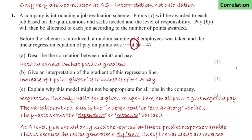At A-level you should be aware that you only use a regression line to predict a response variable. This is because the formula for a regression line of x on y will be different from the formula for y on x. So if the variables are reversed you get a different regression line and different estimates.